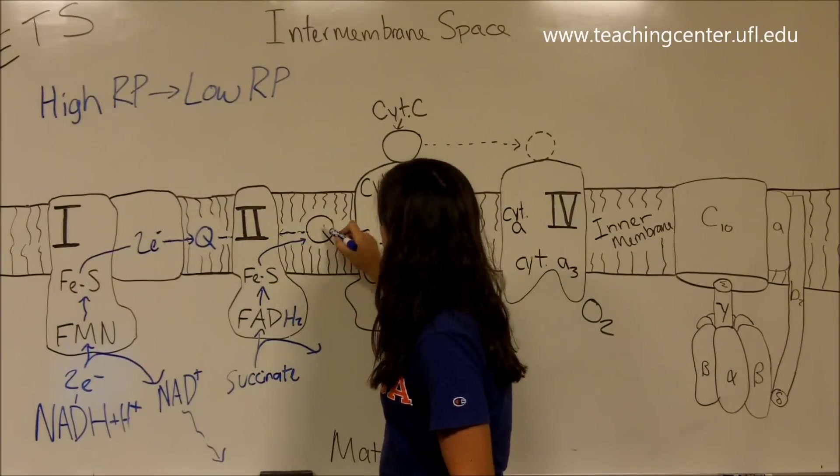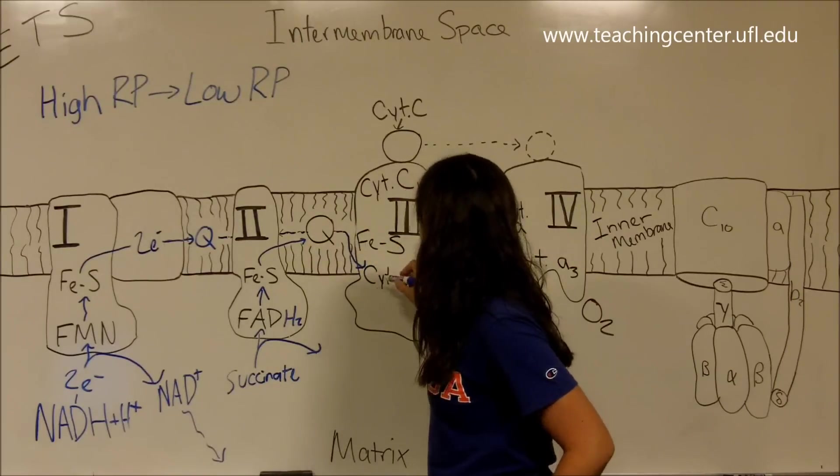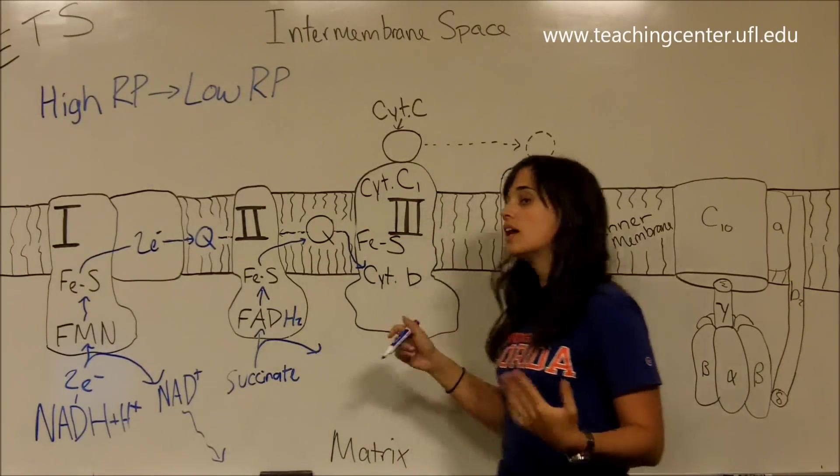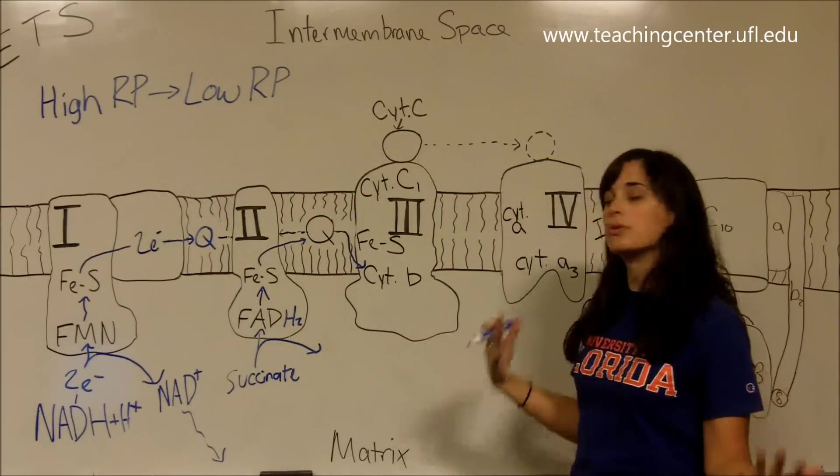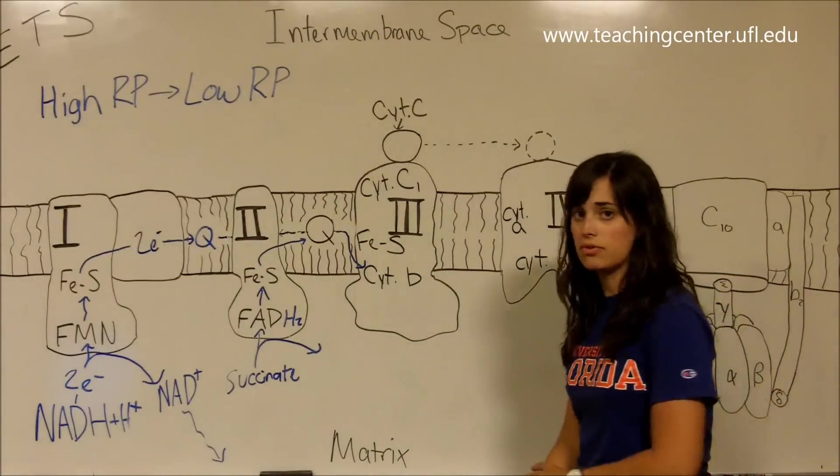We've transferred our two electrons here in complex II from succinate to FADH2 to iron-sulfur complex. And now the two electrons are on CoQ. And of course, just as in complex I, CoQ is going to transfer those electrons, those two electrons, to cytochrome B. So now we're caught up with both complexes.